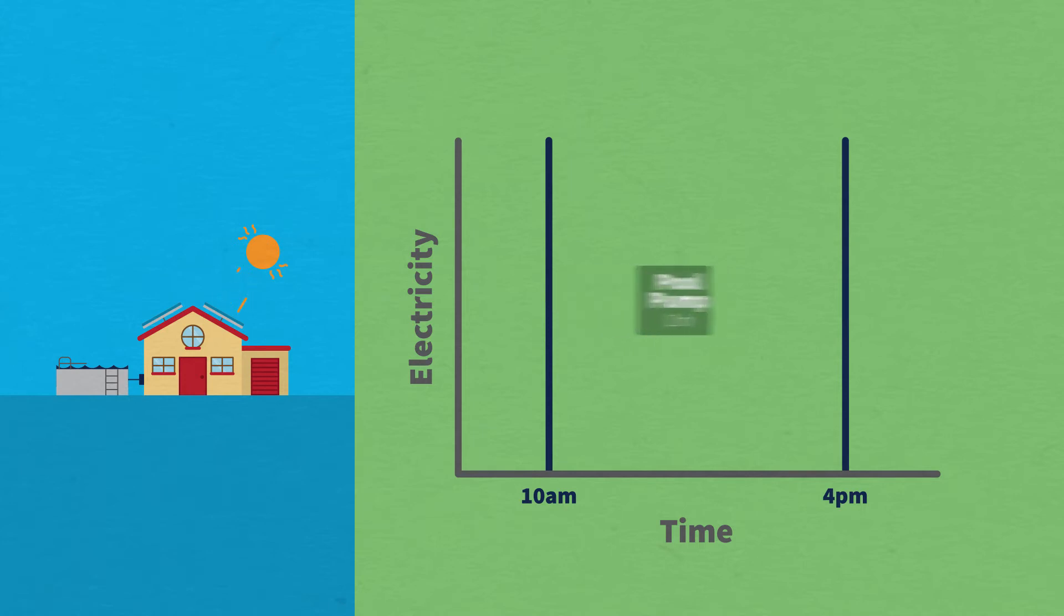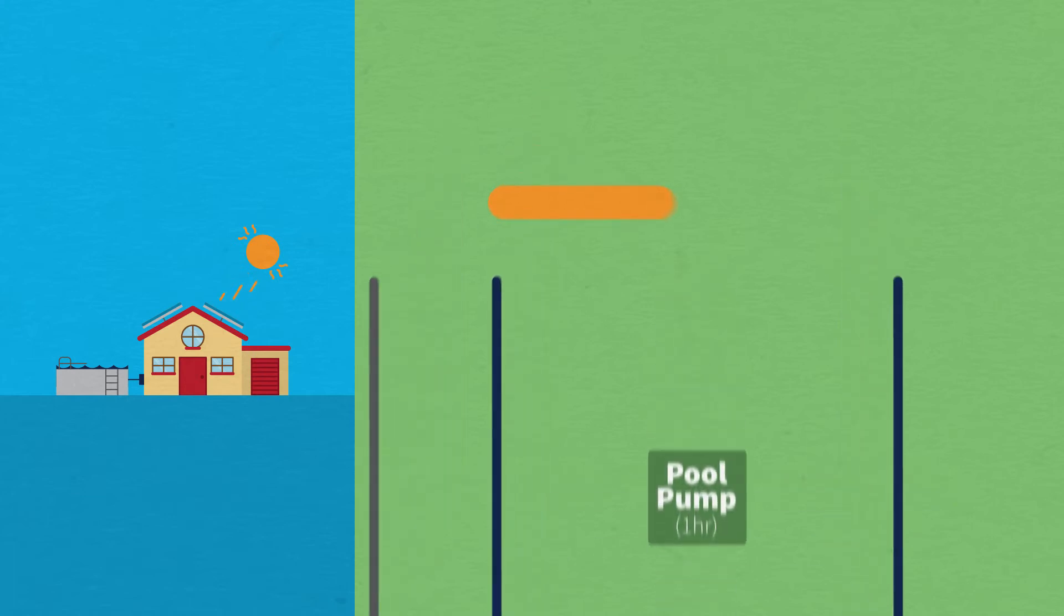So, from 10am to 4pm, CarbonTrack will be looking for the perfect time to run your pool pump for an hour, all while you're at work. It does this by setting the solar generation threshold.